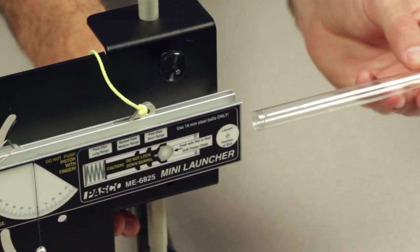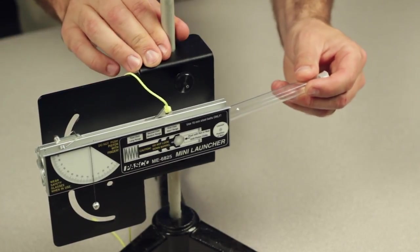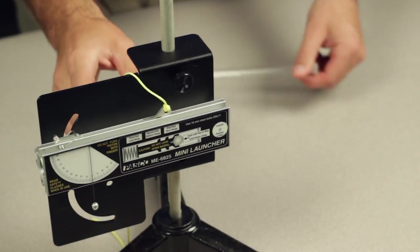Pushing the piston back into the barrel will load the launcher, and each click as the piston is depressed further represents an increase in range, with three clicks being the longest range.